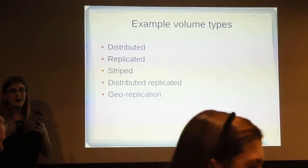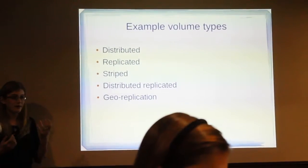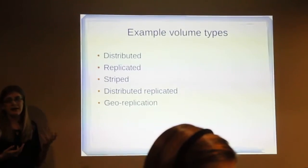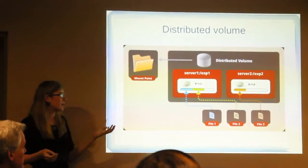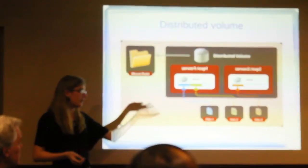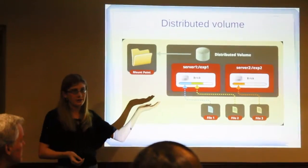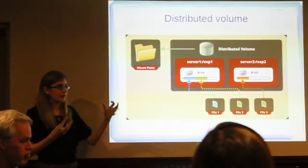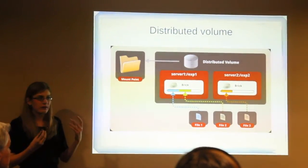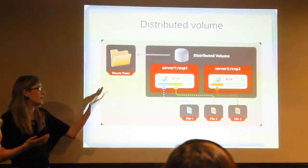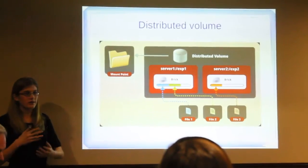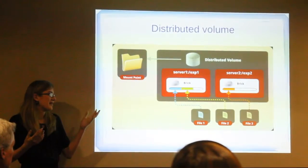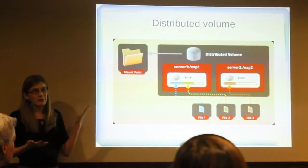There are a lot of different volume types — these are some of the more common ones: distributed, replicated, stripe, distributed-replicated, and geo-replication. A distributed volume is where each of the files are distributed out to the servers in the cluster. For example, file 1 goes to server 1, file 2 to server 1, file 3 to server 2. The advantage is that every bit of unique storage space is being used — if each server was a terabyte, you'd have 2 terabytes of unique space. But the downside is you don't have much data protection, because there aren't multiple copies of any of the files.